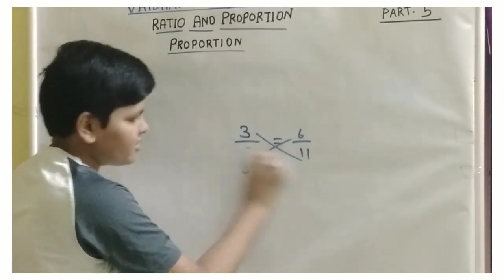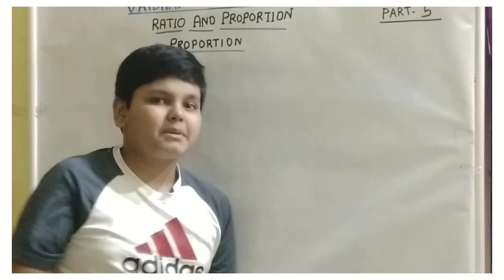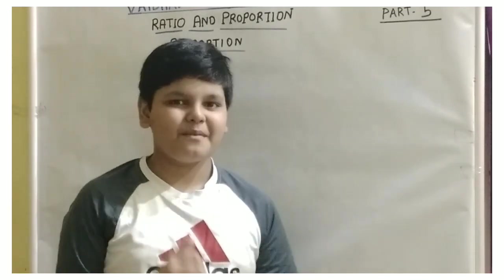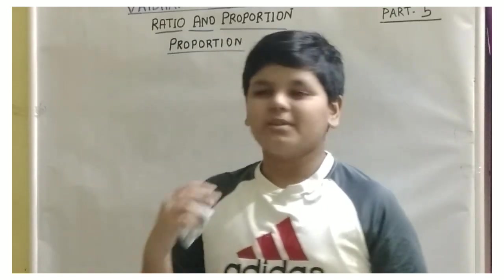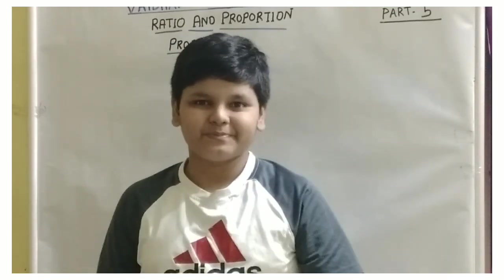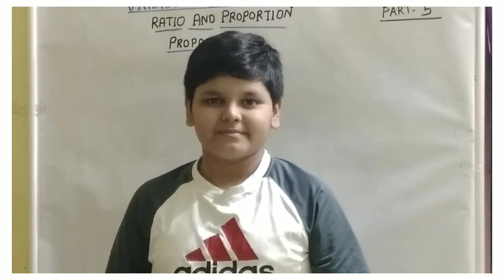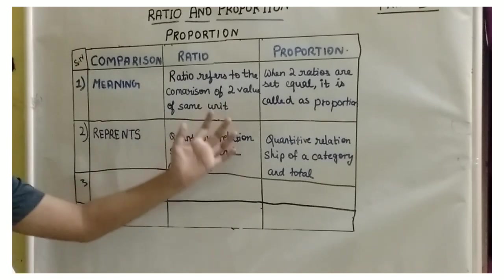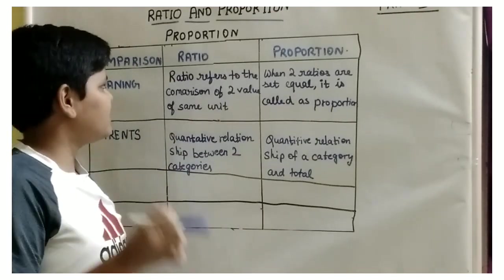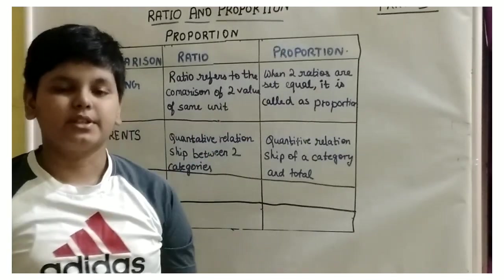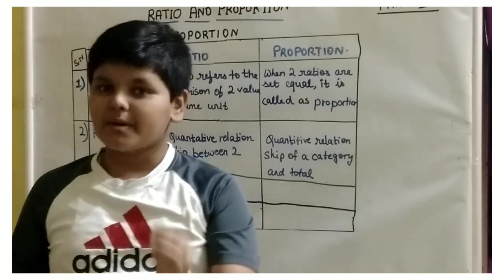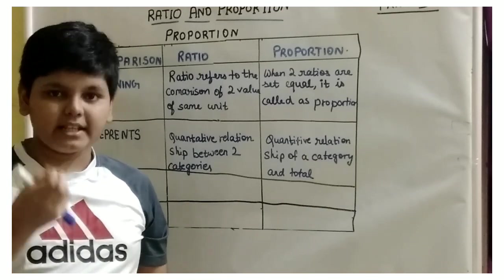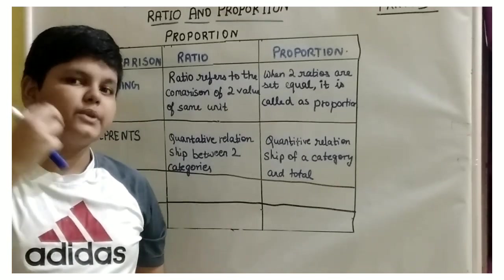So far we have learned about ratios and proportion. Now there may be a general question in our mind: how is ratio different from proportion? Let us try to solve this with a quick table. I have a table here that shows the difference between ratio and proportion. What is proportion again? Proportion is a thing which sets the equality between two ratios.